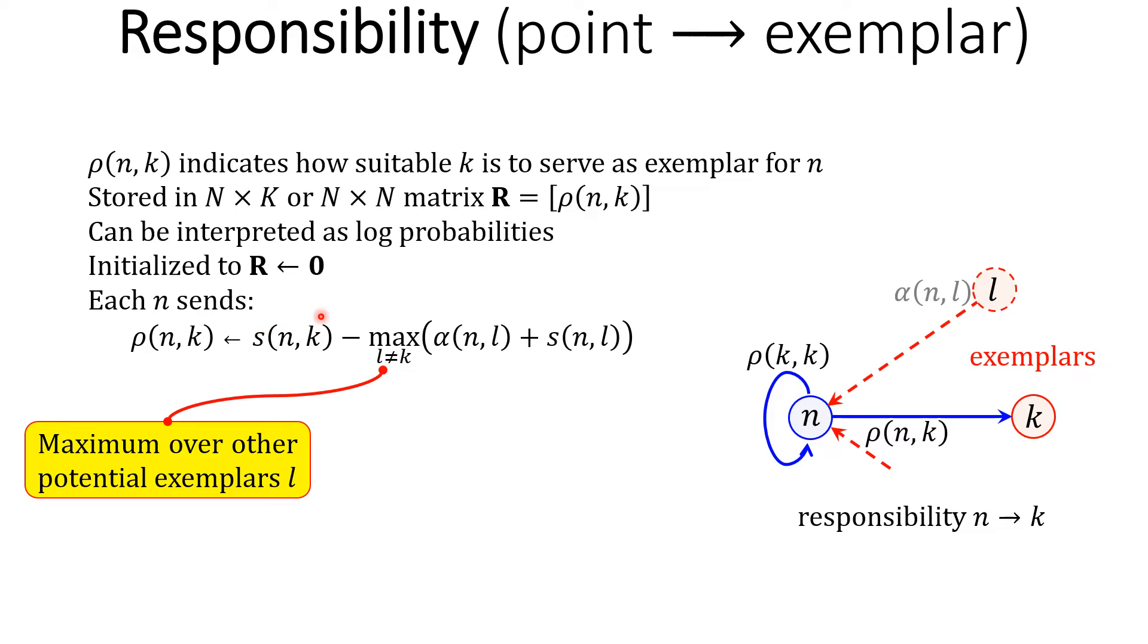From S_nk, we subtract alpha_nl plus S_nl of another potential exemplar l.